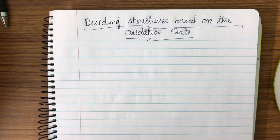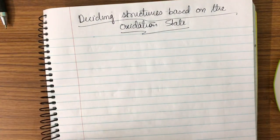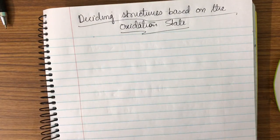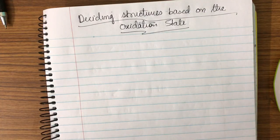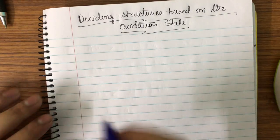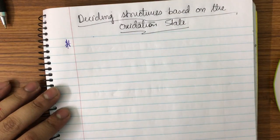Hello friends, welcome to my new video. I will be teaching you to decide the structures based on the oxidation state of a compound. First of all, you must know the group numbers: for nitrogen it is 5, for oxygen it is 6, and for sulfur it is 6. You must know the group numbers of elements. I will be comparing oxidation state with respect to the group number.